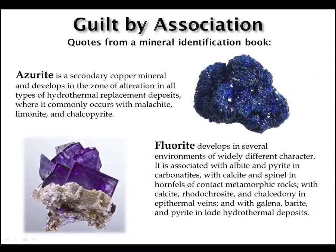The last observable tool is guilt by association. In mineral descriptions, it is common that minerals which are associated with each other are listed. For example, azurite is commonly found with limonite and chalcopyrite, and fluorite is associated with specific suites of minerals in specific geologic environments. In some cases, when a mineral identifier is stuck between two possible candidates, knowing where the sample is from and identifying other minerals that may be in the sample can really help with positive identification.